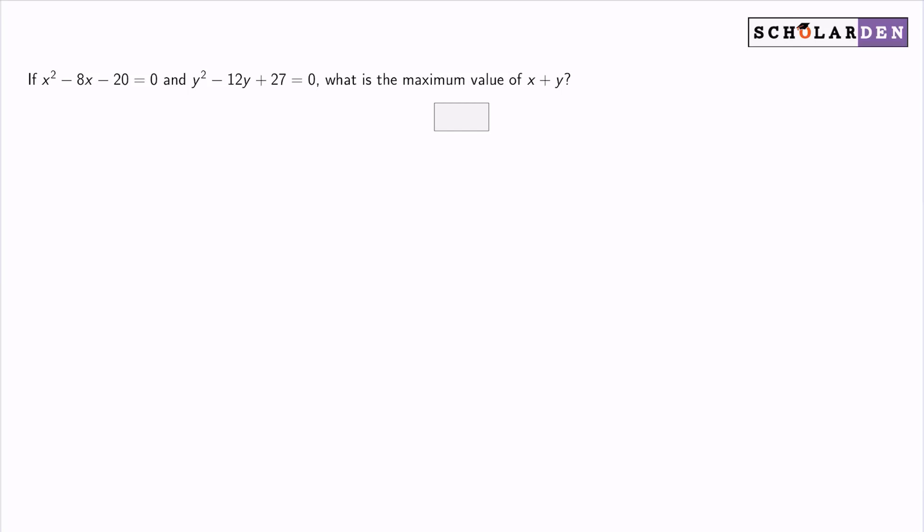Hey everyone. If x squared minus 8x minus 20 equals zero and y squared minus 12y plus 27 equals zero, what is the maximum possible value of x plus y?